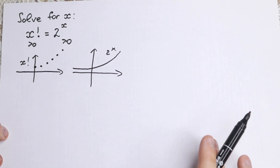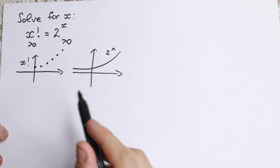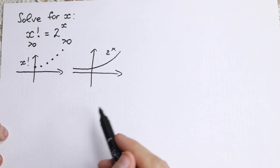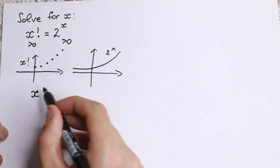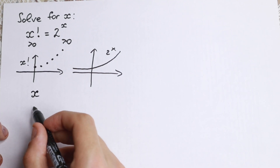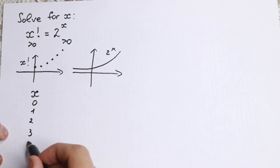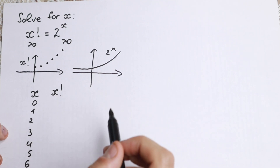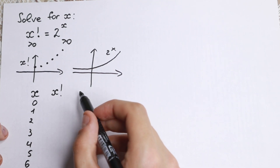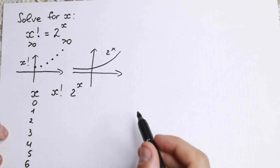But why did I draw these graphs? I want to show you a really interesting moment — let's see how much faster each function grows. Let's look at x values 0, 1, 2, 3, 4, 5, 6. On the left we have x factorial and on the right we have 2 to the x.